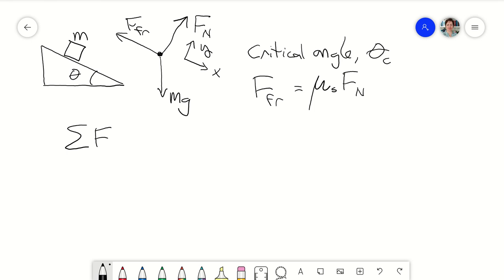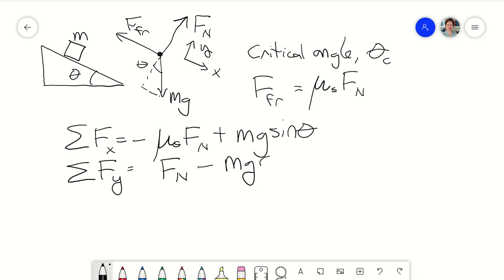the sum of the forces in the x direction, and we'll need to take gravity and put it into components. So in the x direction is minus the force of friction, only now we'll write μs times the normal force, plus a component of gravity, mg sin θ. The sum of the forces in the y direction is the normal force minus mg cos θ.